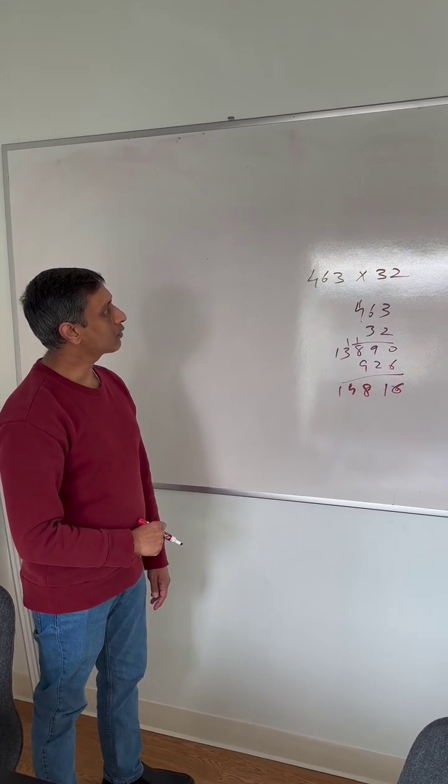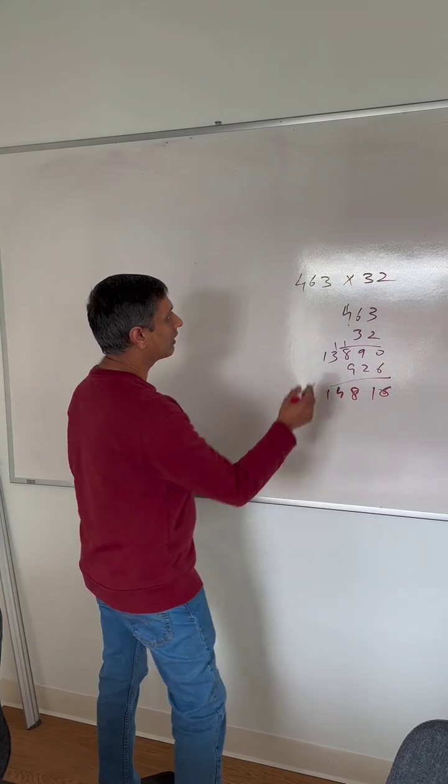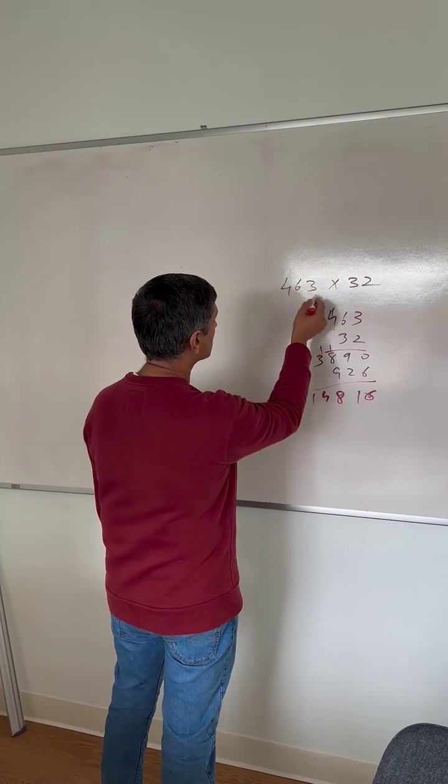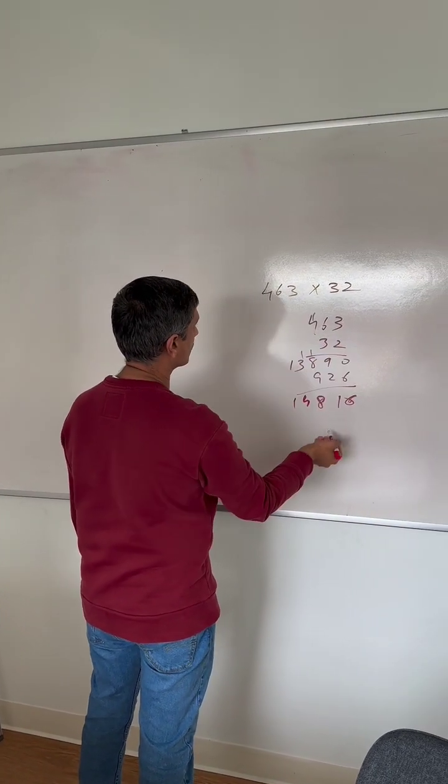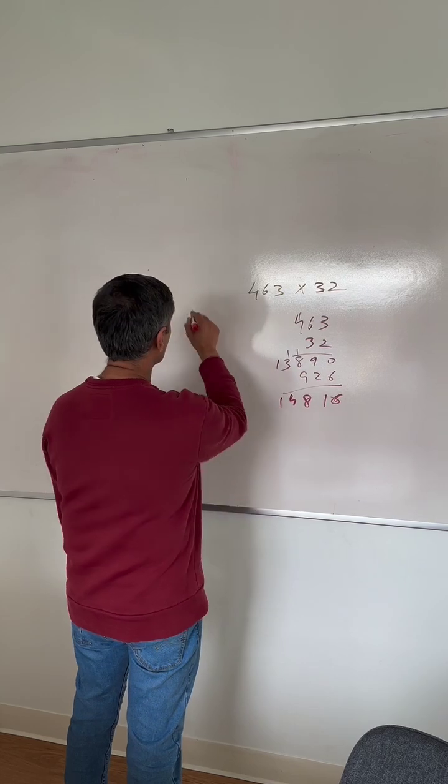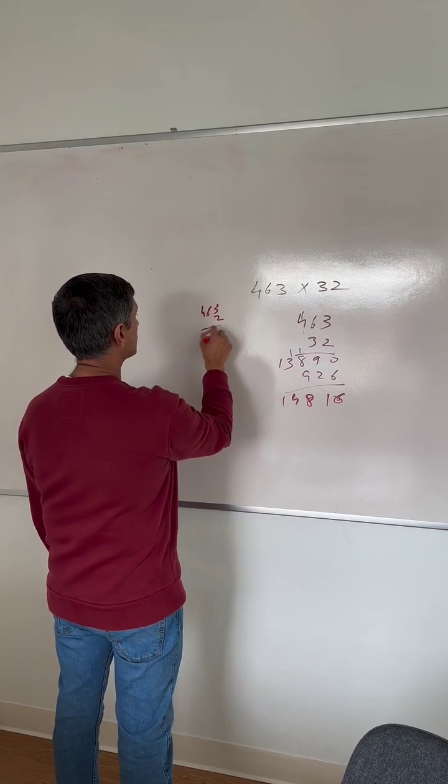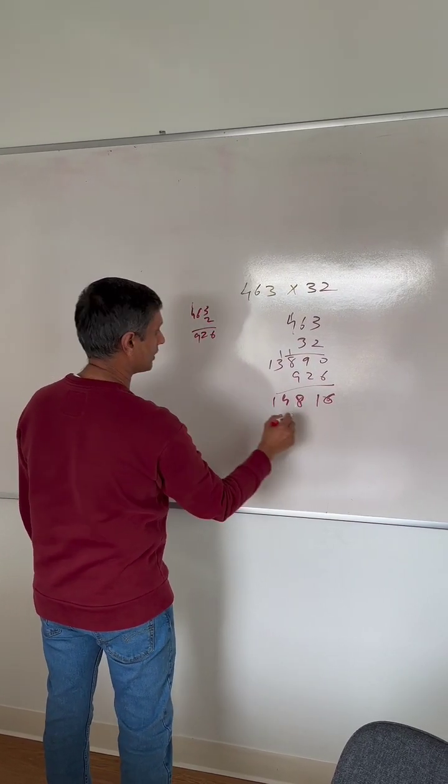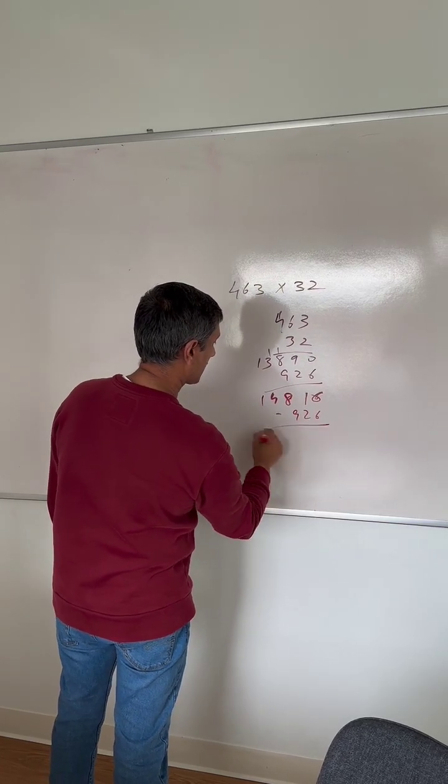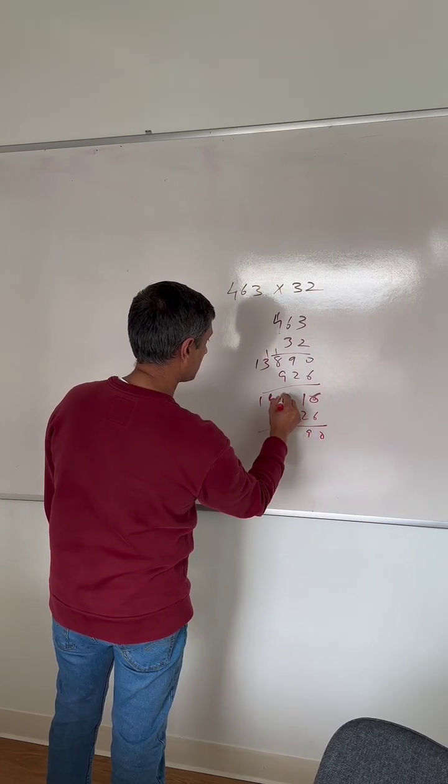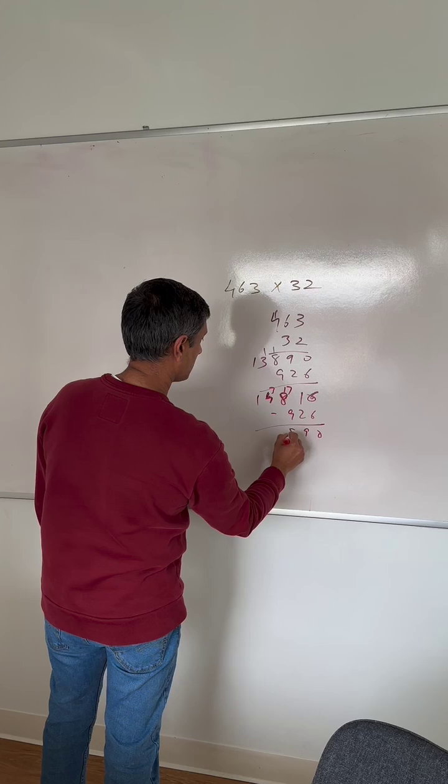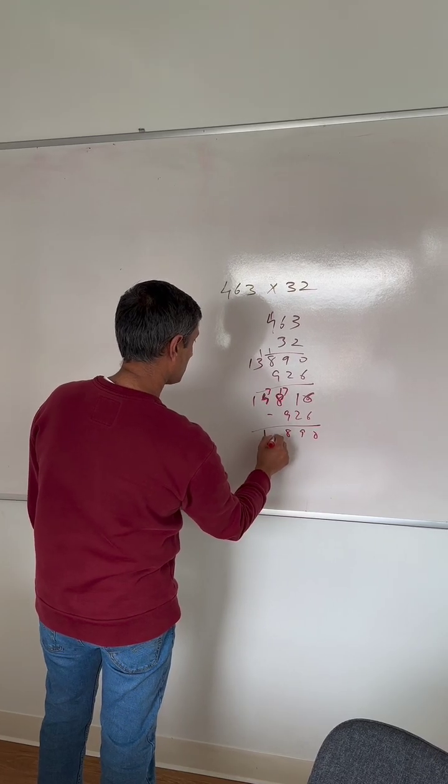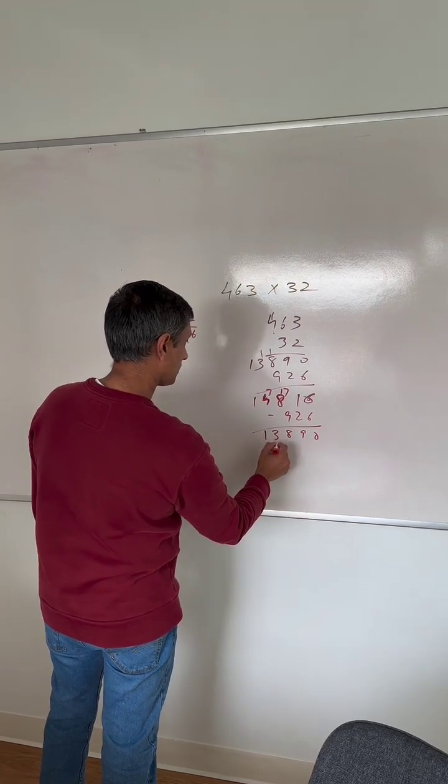463 times 30, I'm going to just subtract 463 times 2 from this total. So that's like 463 times 2. So that is 926. So I'm going to subtract 926 from this. So that gets me to 13890.